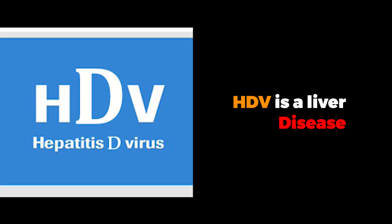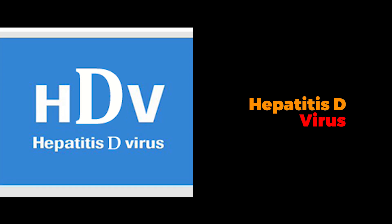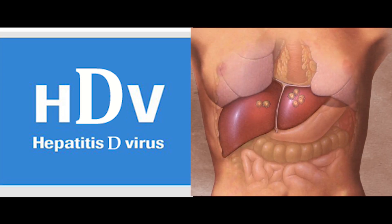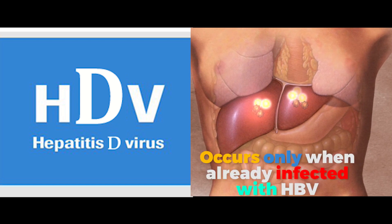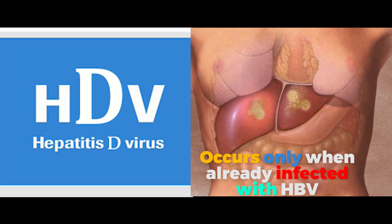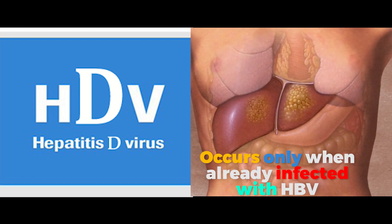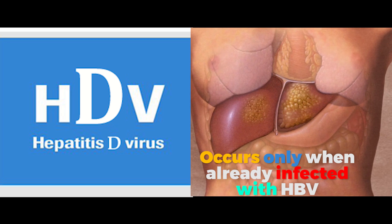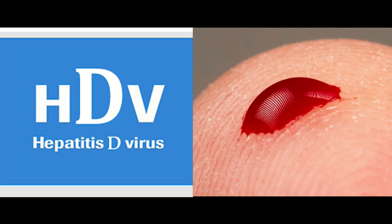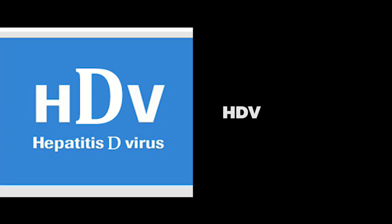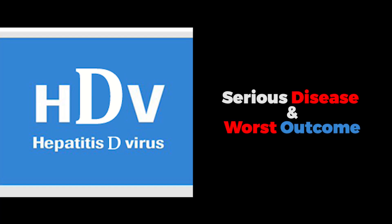Hepatitis D is caused by the hepatitis D virus (HDV). It is a rare form of hepatitis that occurs only in those who are infected with HBV. HDV is contracted through direct contact with infected blood, and the combination of both HDV and HBV can result in a more serious disease and worse outcome.